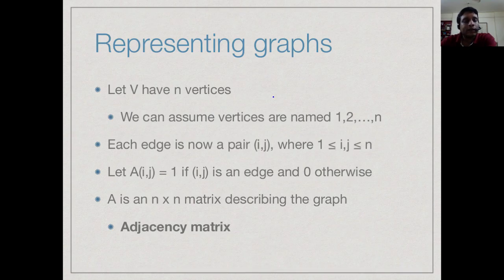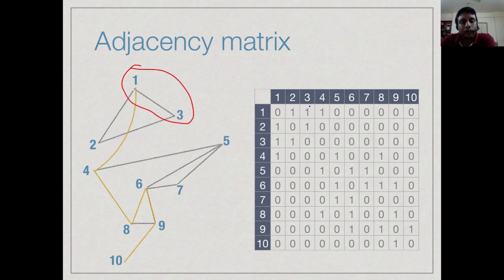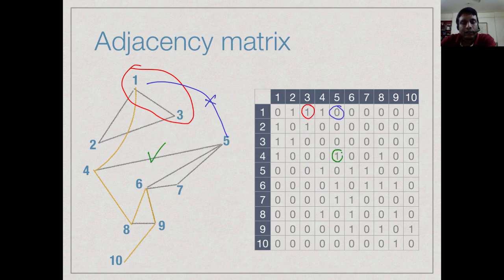The first representation we can have is to record which pairs i and j are connected. This is called an adjacency matrix. In this matrix, a_ij is 1 if and only if (i, j) is an edge. For a graph with 10 vertices, we rename vertices 1 through 10. For instance, there is an edge from 1 to 3, so entry a(1,3) is 1. There is no edge from 1 to 5, so a(1,5) is 0. Similarly, for edge (4,5), entry a(4,5) is 1.